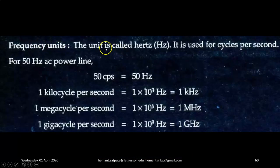Frequency units. The unit of frequency is Hertz (Hz), used for cycles per second. For 50 Hz AC power line, we have 50 cycles per second, which equals 50 Hertz. One kilocycle per second is 1 × 10³ Hertz, that is 1 kilohertz.